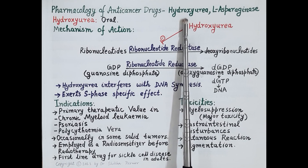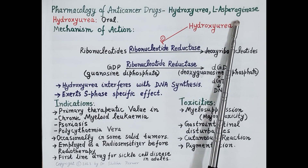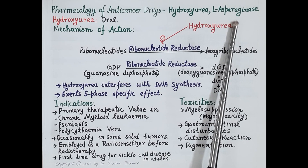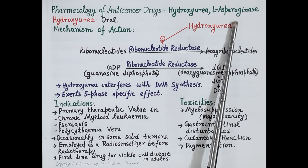Hydroxyurea is an S-phase specific drug — it interferes with the synthesis of DNA. L-asparaginase deprives leukemic cells of the amino acid L-asparagine, and this induces apoptosis, or programmed cell death, in these leukemic cells.